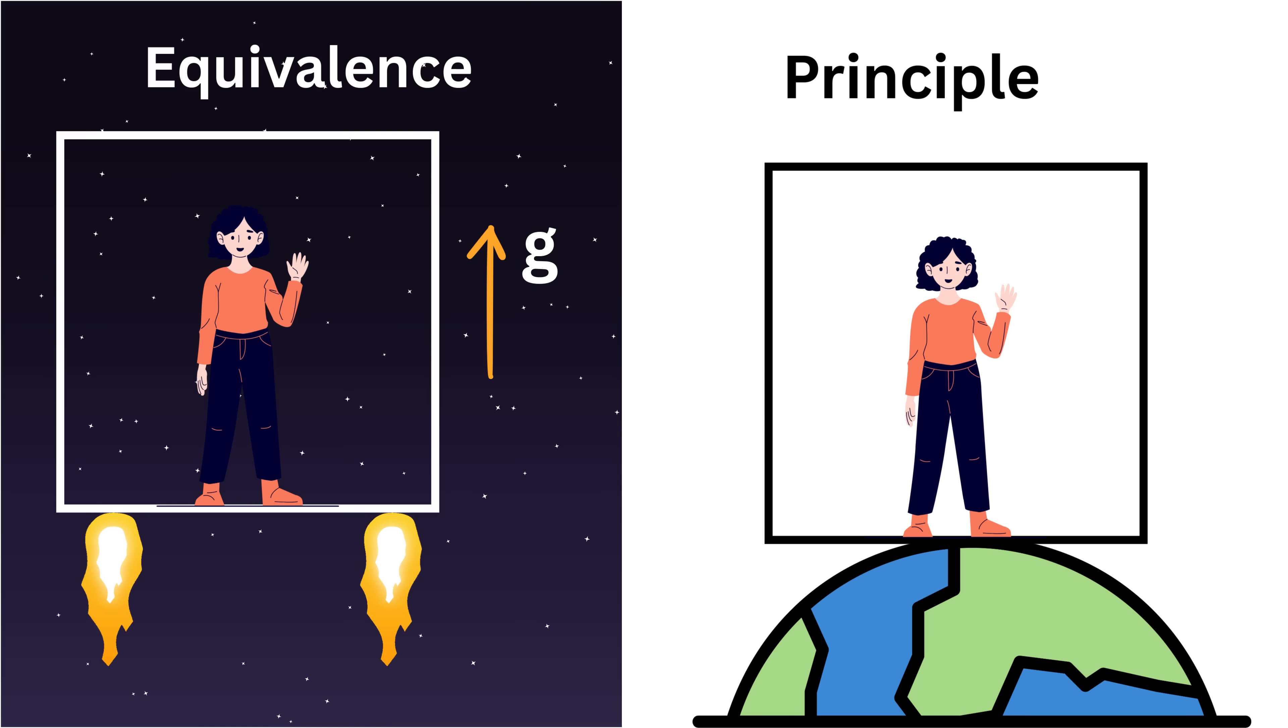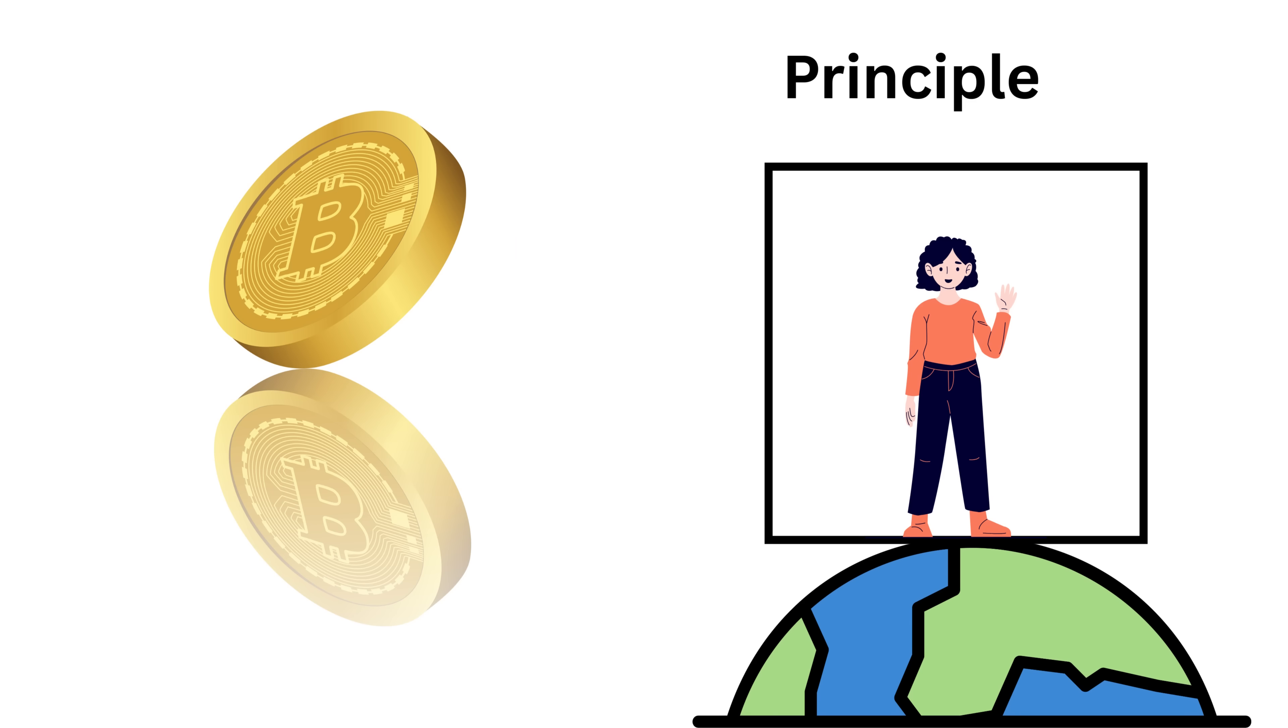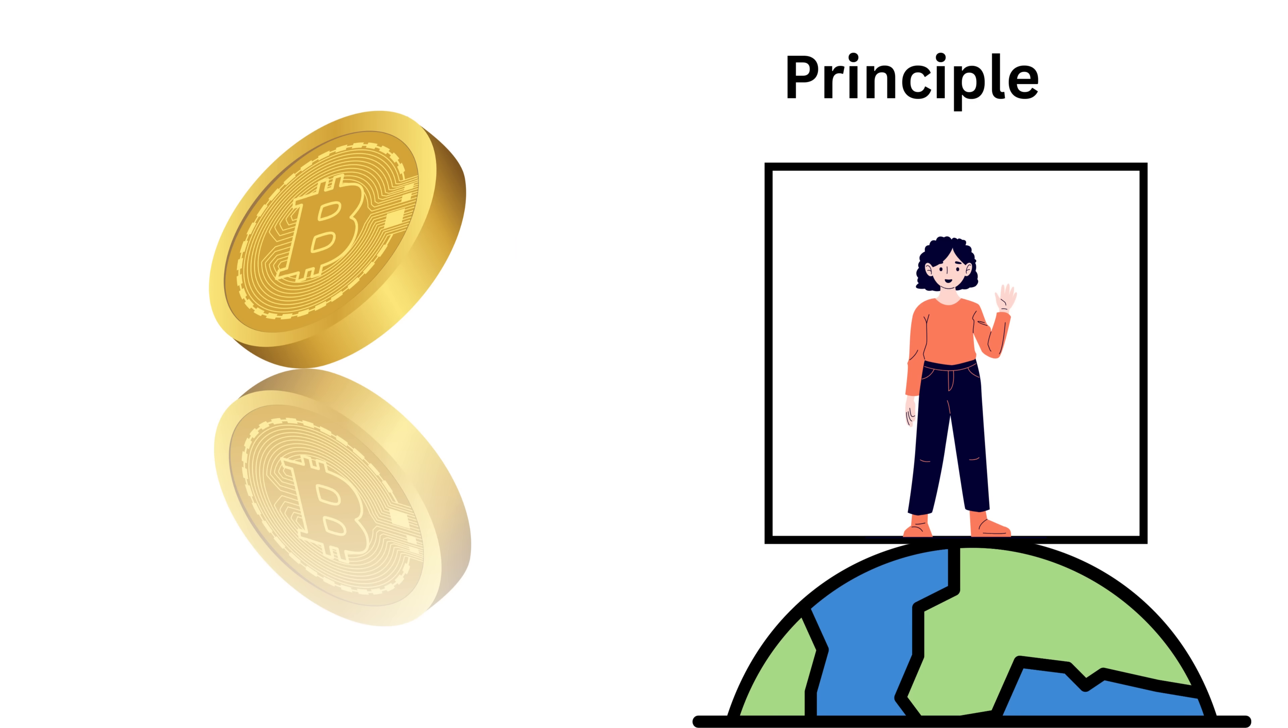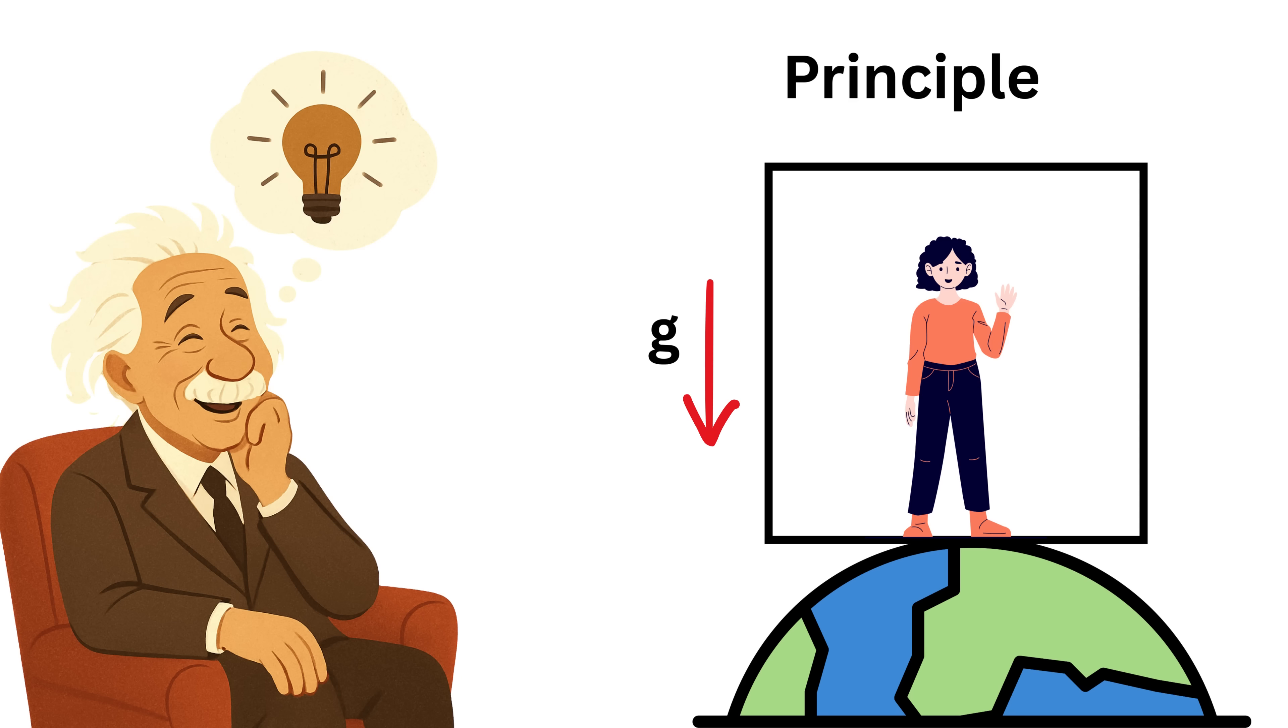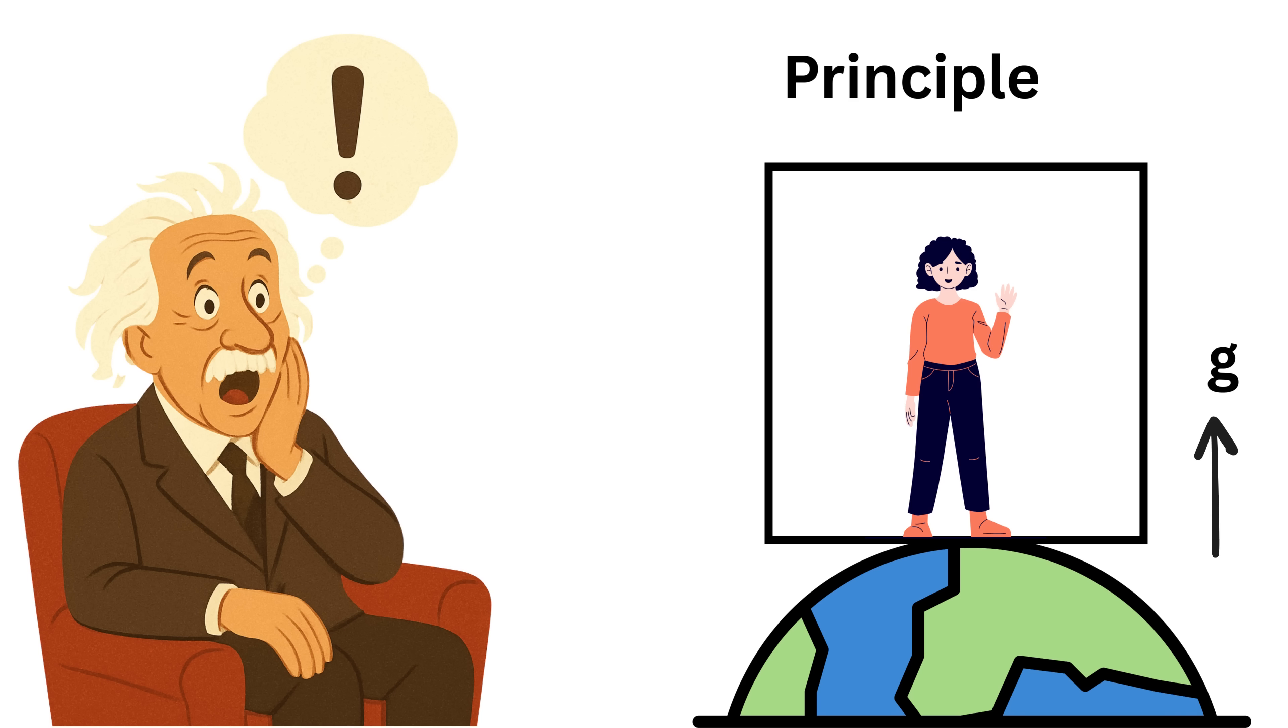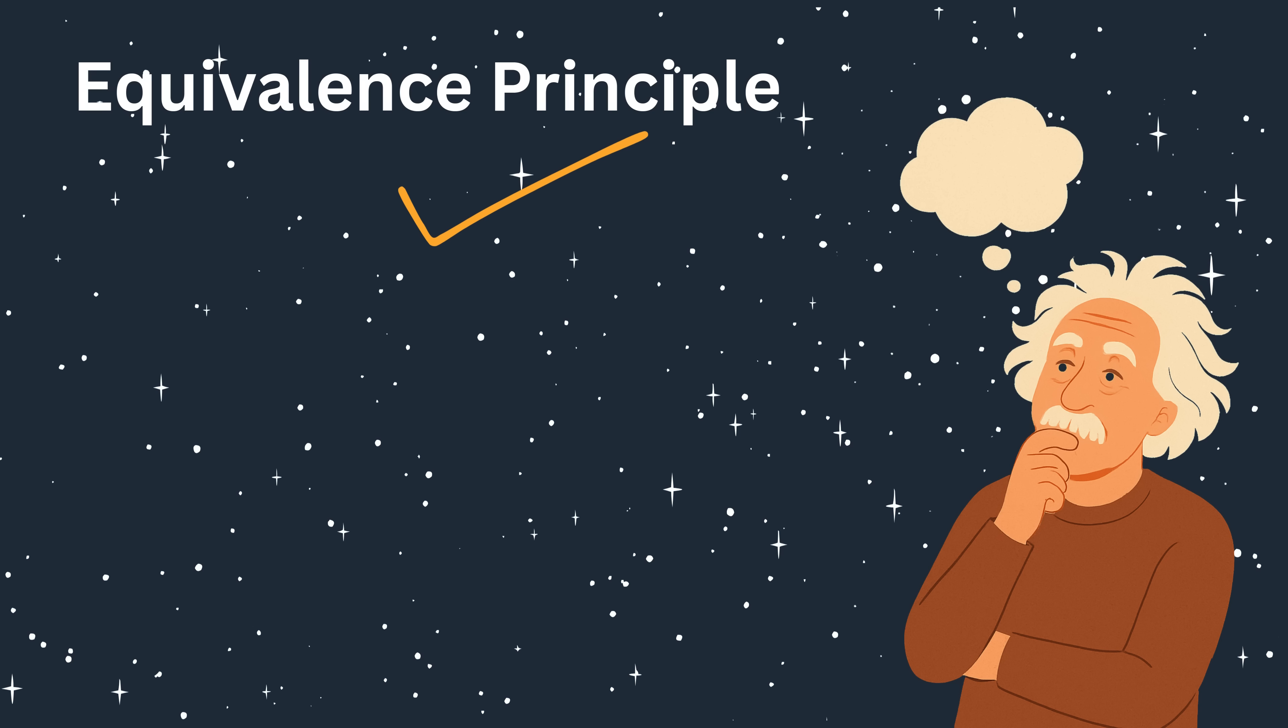This is called the equivalence principle, where the effects of gravity and acceleration can be completely identical, depending on your point of view. To the person inside the room, gravity and acceleration are two sides of the same coin. This meant that instead of thinking of gravity as a force pulling us down, maybe we could think of it as Earth is accelerating upward beneath us with an acceleration of G. But Einstein wasn't done yet.